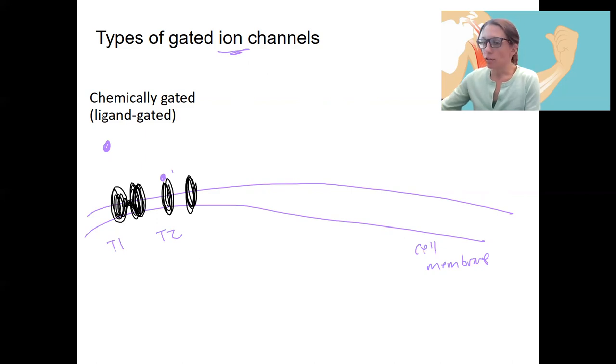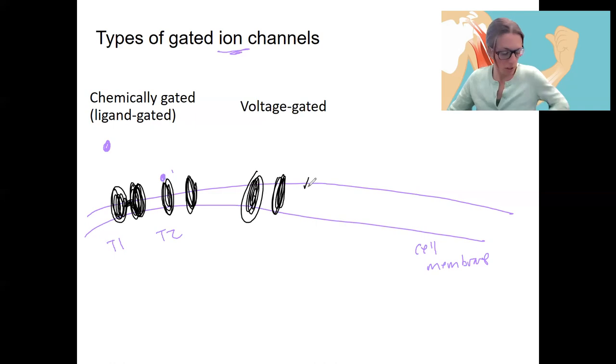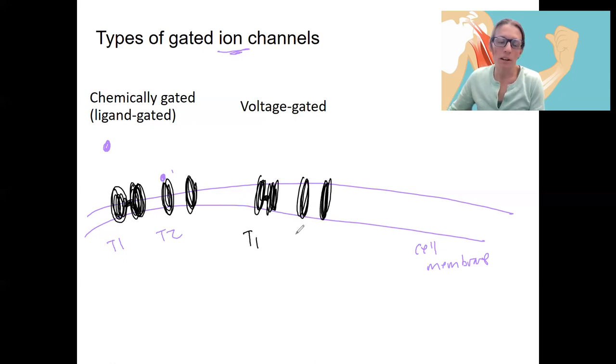Then we can have a voltage gated channel. This is when we'll have T1 and T2 again. Oops, that should be closed. So this channel is closed. This channel is open. What causes it to open? Again, a change in voltage. This is a little bit harder to think about. We'll see it again. So this is, let's say, minus 70 millivolts inside versus out. So actually, let me write that inside. We usually talk about the charge of the inside. Let's say the inside of the membrane changes to be minus 30 millivolts. That could cause this thing to open.